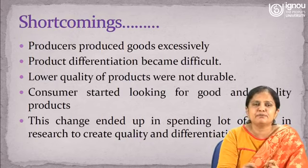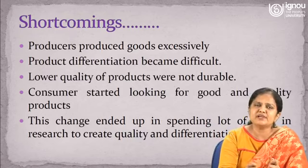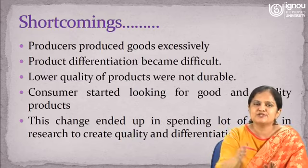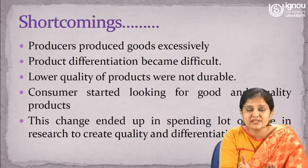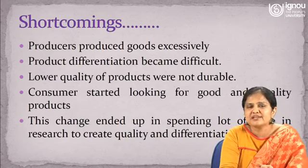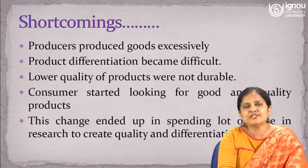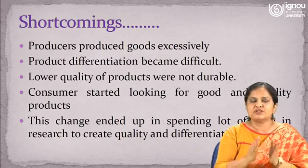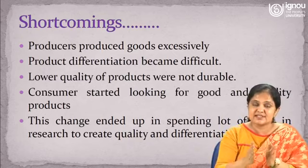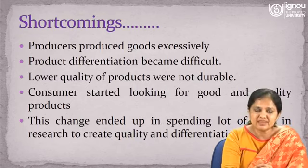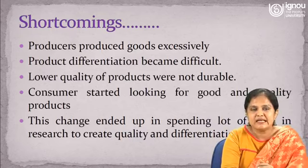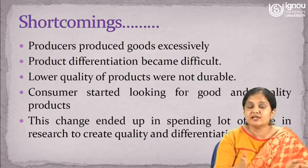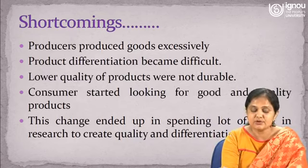Looking at the shortcomings of the production concept: producers produced goods excessively and product differentiation became difficult. All products were more or less similar to each other because it was bulk production, and when product differentiation became difficult, customers also tended to get confused about which producer to go with. Lower quality products were produced because marketers wanted to keep prices lower, which resulted in less durability of the products. Consumers then started looking for good quality products, and this change paved the way for another approach of marketing — the product concept of marketing.